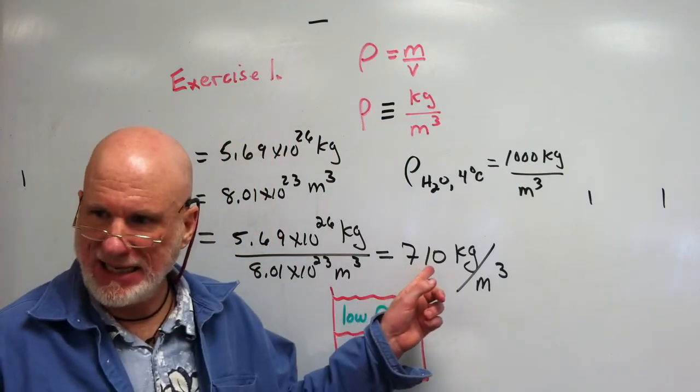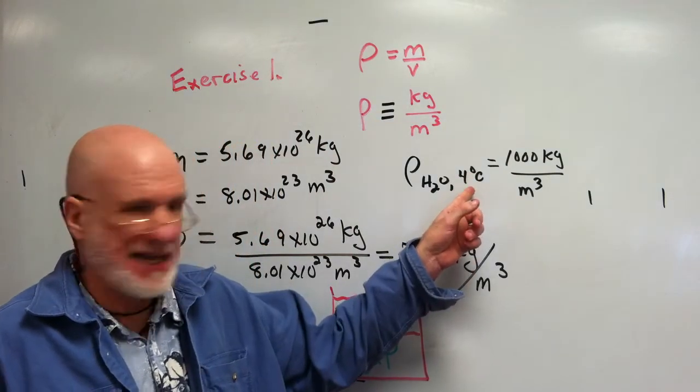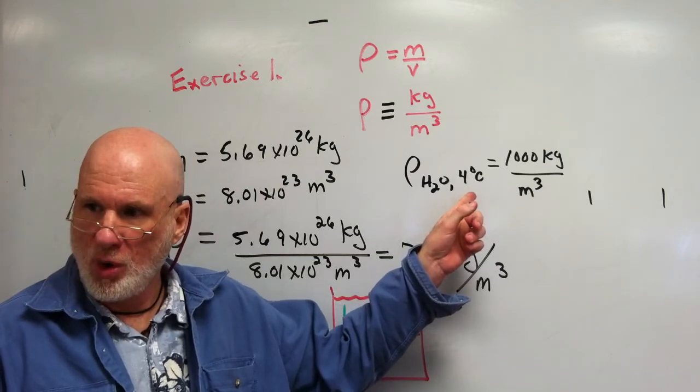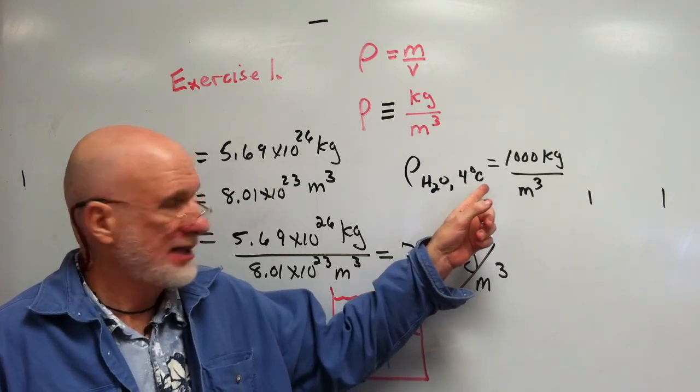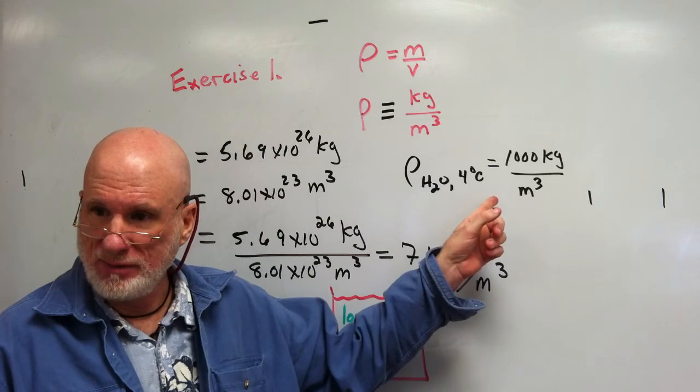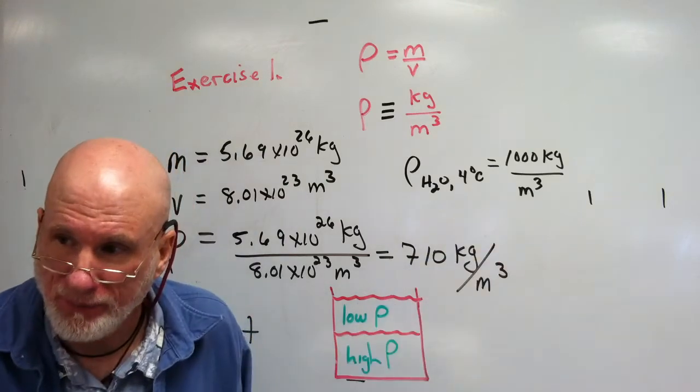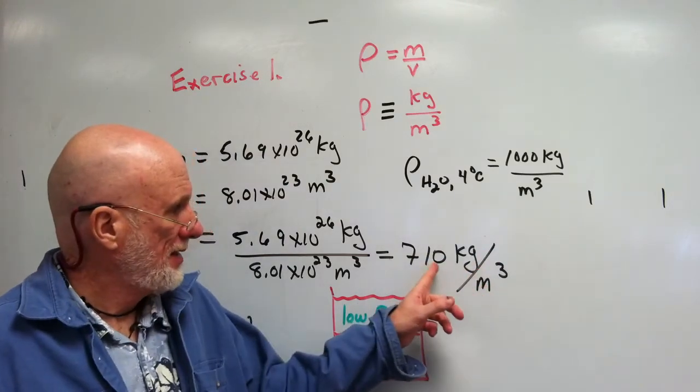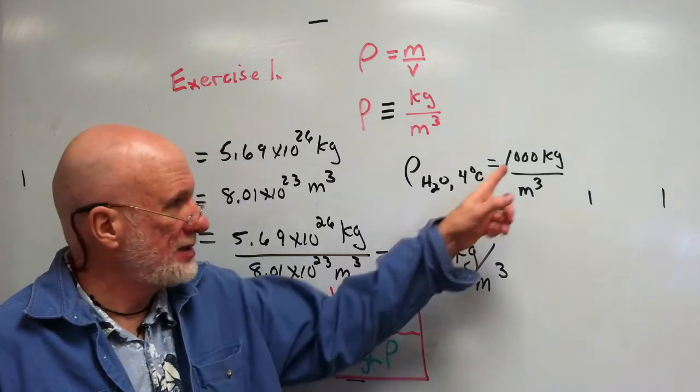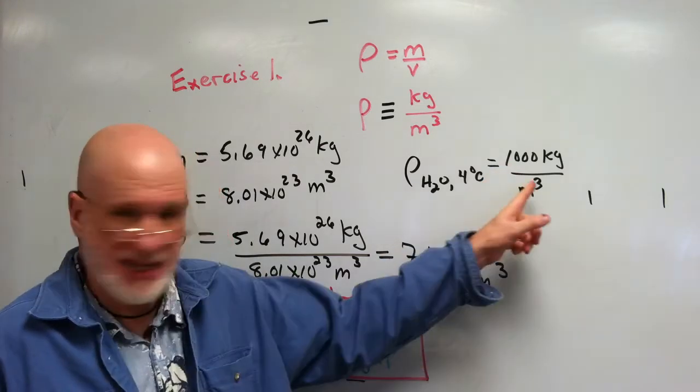So Saturn has a density of 710 kilograms per cubic meter. The density of water is 1000 kilograms per cubic meter. It's going to float. This is less dense than this.